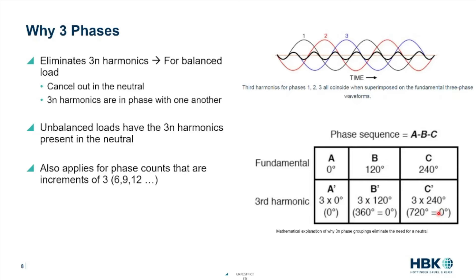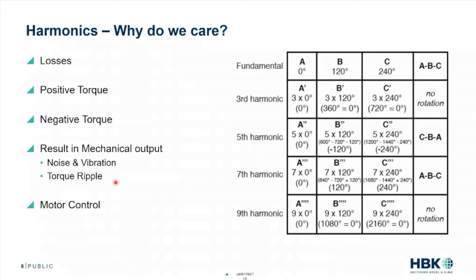That's pretty exciting. We've eliminated the second-order harmonics by having symmetry, and the third-order harmonics cancel out in the neutral, eliminating our 3N harmonics. In practice, we very rarely have a perfectly balanced system, but this is a big part of why we use three phase. Unbalanced loads have that 3N harmonic in the neutral — but this gives us a troubleshooting tool: if we start seeing third harmonic, we know we have an imbalance. This also applies for anything in increments of three. German auto manufacturers going to higher phase-count machines still get the benefit of this 3N parity. So we've eliminated the even harmonics and the triplen harmonics.